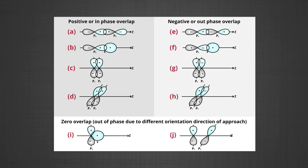Let us discuss the overlapping of atomic orbitals. When the orbitals of two atoms come close to form a bond, their overlap may be positive, negative, or zero, depending upon the sign — that is, the phase and direction of orientation — of the amplitude of the orbital wave function in space. The figure shows positive and negative overlap. The sign on the boundary surface diagrams depicts the phase of the orbital wave function and is not related to charge. Orbitals forming bonds should have the same sign, i.e., phase and orientation in space; this is called positive overlap.